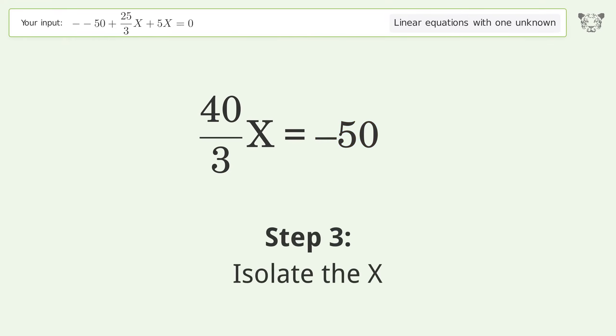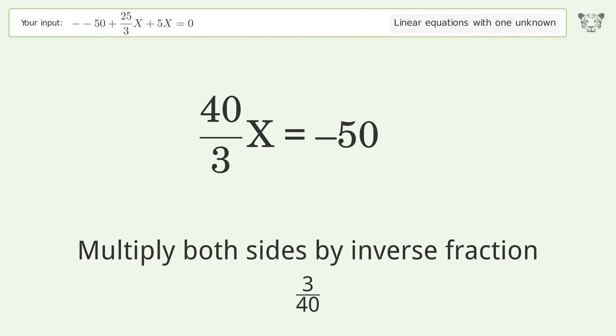Isolate the X. Multiply both sides by inverse fraction 3 over 40.